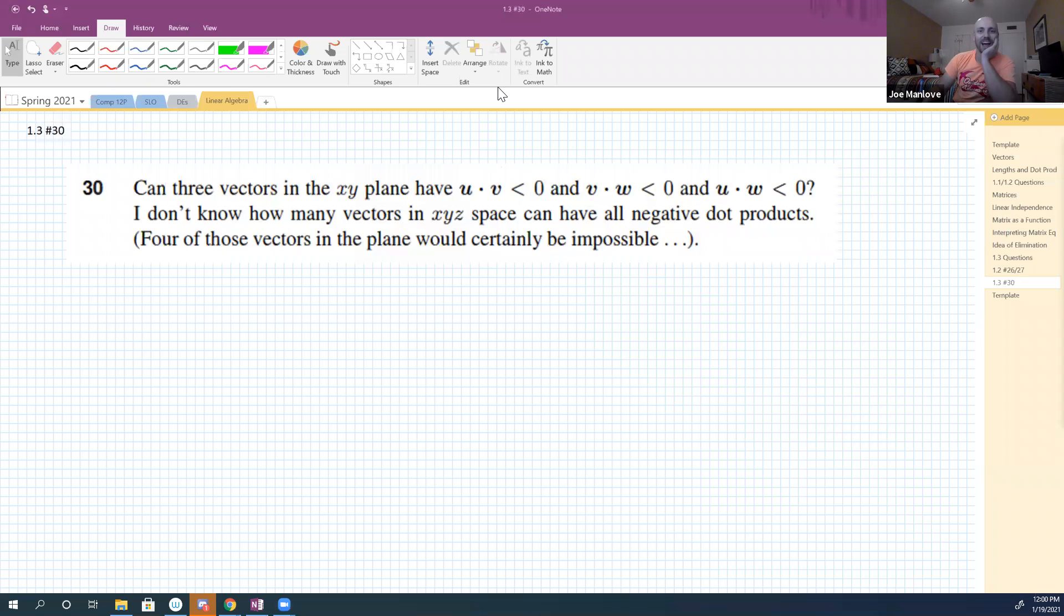Okay, let's record to the cloud. So our question number 30 in section 1.3 is: can we have three vectors in the xy plane where u·v < 0, v·w < 0, and u·w < 0? He says something about not knowing this answer for xyz space.